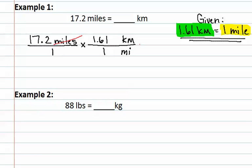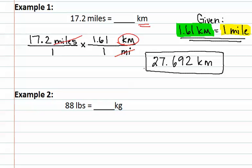We can now reduce the units, and we see that we have kilometers, which is what we were looking for. We now multiply across on the top to find that we get 27.692 kilometers. This would be over one, but the one is not needed. Therefore, we have found that if there are 17.2 miles, it will equal 27.692 kilometers.